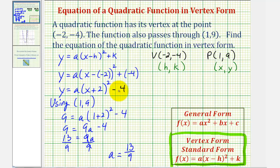We'll just take this equation here and substitute 13 ninths for a, and we'll also replace y with f of x. So our quadratic function would be f of x equals 13 ninths times the quantity x plus two squared, and then minus four.